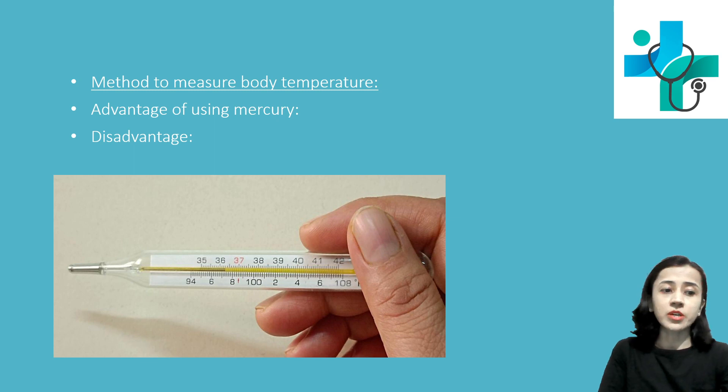Disadvantages of using mercury: that is, mercury is poisonous. If suppose you have placed the thermometer in the mouth of a child or some patient having seizures, it may result in breakage of the bulb and the mercury may come in contact with the child's mouth and that is harmful, that is poisonous.